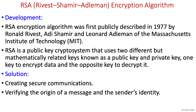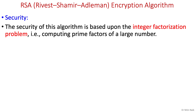RSA allows two parties to create secure communications and enables receivers to verify the origin of a message and the sender's identity. The security of this algorithm is based upon the integer factorization problem, meaning computing the prime factors of a large number is very difficult.